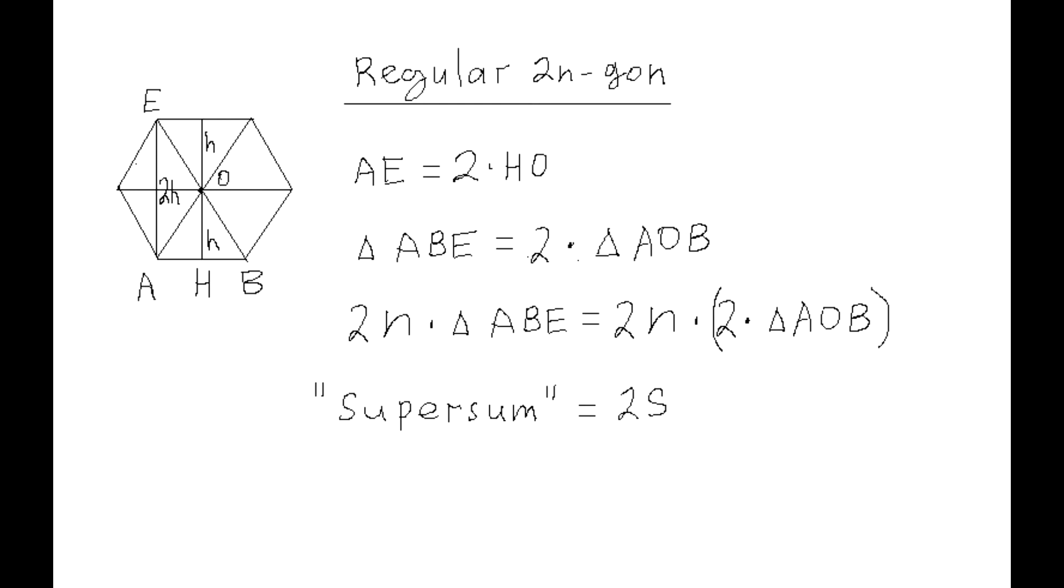In such a polygon, the height of triangle ABE, where AB is one of the sides of the polygon, and E is the vertex on the opposite side of this polygon, the height AE of this triangle is 2 times the height of triangle AOB, where O is the circumcenter of this polygon.